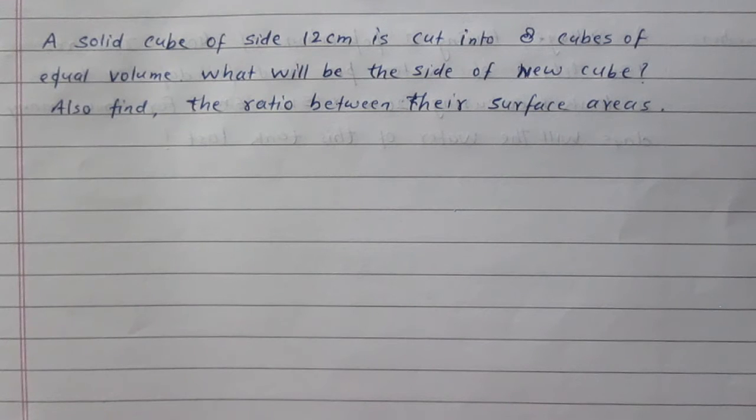A solid cube of side 12 cm is cut into 8 cubes of equal volume. What will be the side of new cube? Also find the ratio between their surface areas.